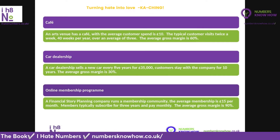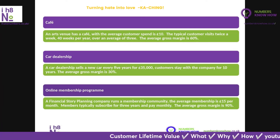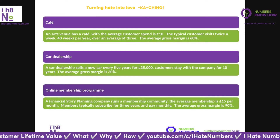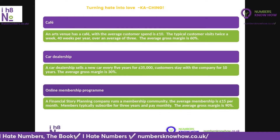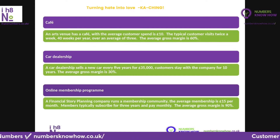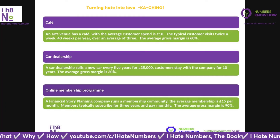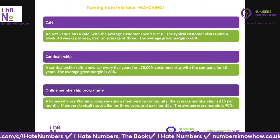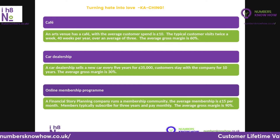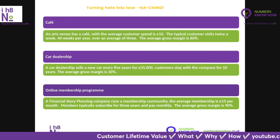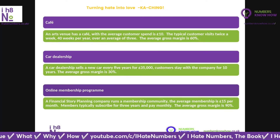There are three scenarios I'm going to use — substitute these for your own business. First example: a café in an arts venue. The average customer spend is £10, the typical customer visits twice a week over 40 weeks a year, the average retention period is three years, and the average gross margin on refreshments, cakes, coffees, and teas is 60%. Second example: a car dealership. They sell a car every five years for £35,000, the customer stays for two buying cycles — 10 years — and the average gross margin is 30%.